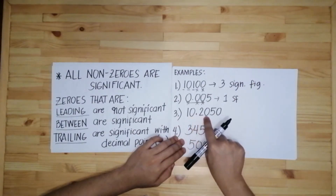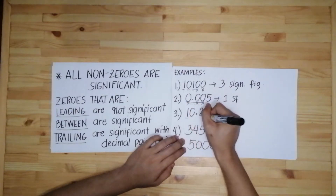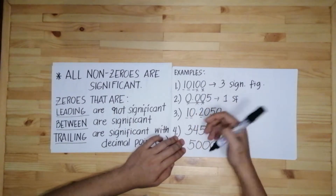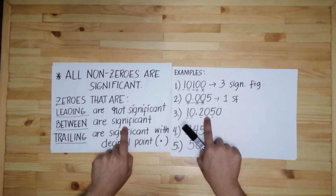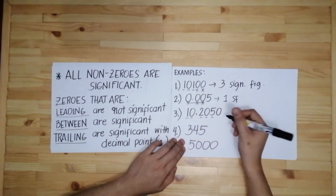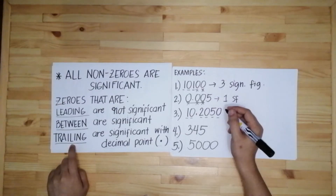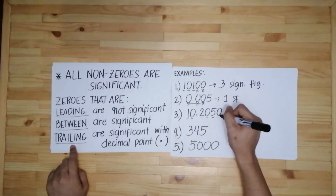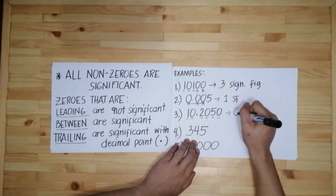Number three, we have 10.2050. First, let's underline the non-zero numbers: we have one, two, five — they are automatically counted as significant figures. The zero between one and two is 'between,' so it is significant. The zero between two and five is also 'between,' so it is also significant. Then we have one trailing zero at the end — since there is a decimal point, it is also counted as a significant figure. All in all, we have six significant figures.